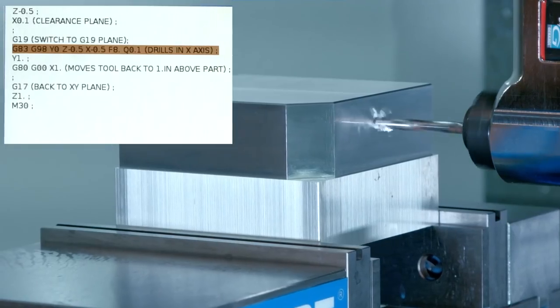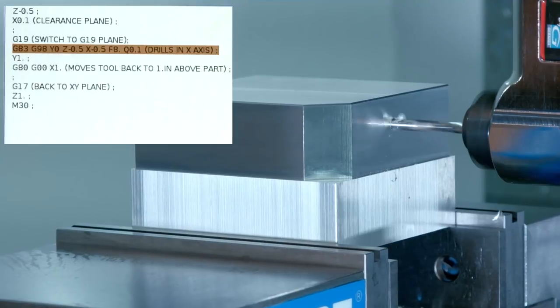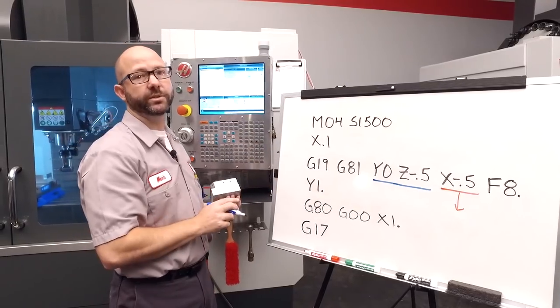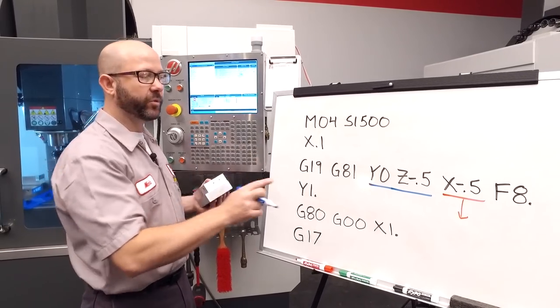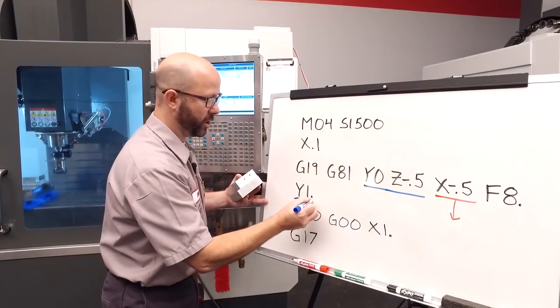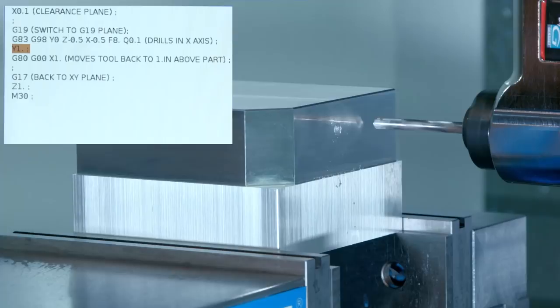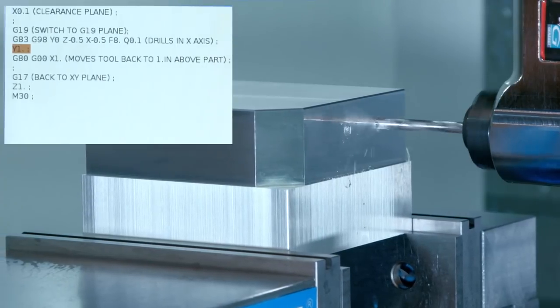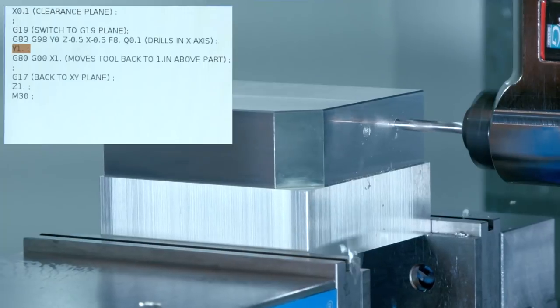Again, the control knows that our depth is going to be along our X axis because we're using a G19. Now, our G81 is a modal can cycle, which means it's going to drill at every YZ location that it comes to. So after it drills at Y0, we move to Y1.0, and it's going to drill another hole to X minus 0.5.